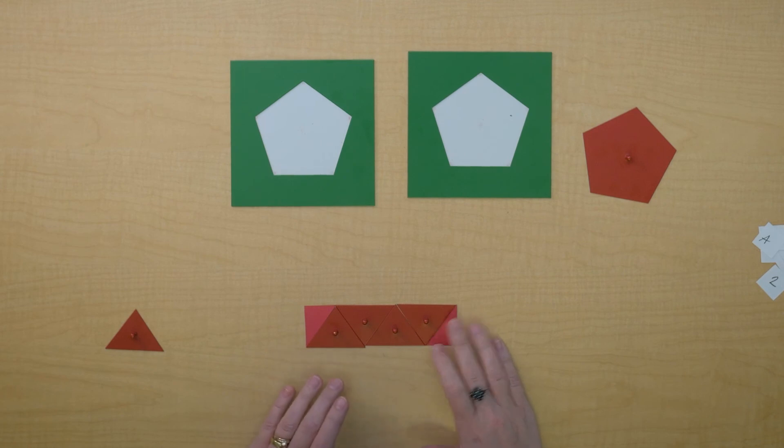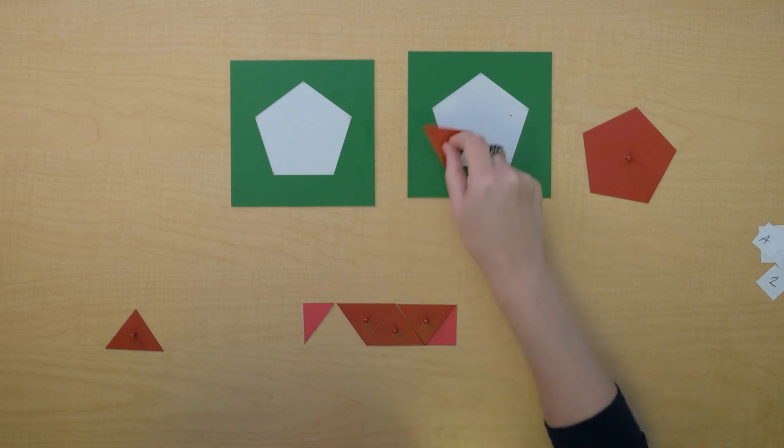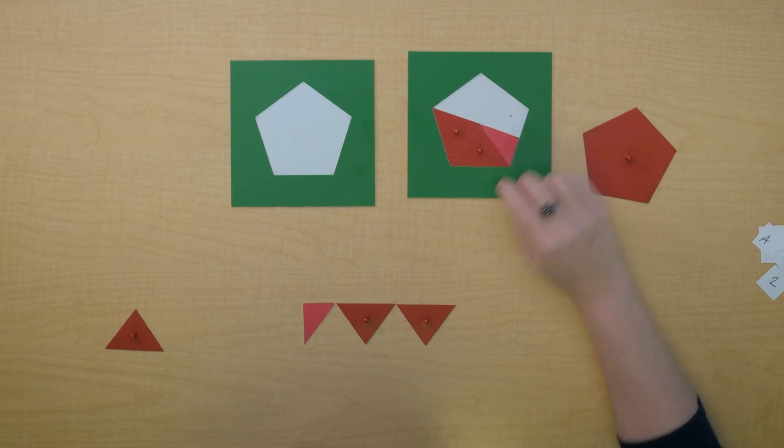So we know that, let's take a look, the base of this rectangle is, let's take a look at what it is in terms of the pentagon. Oh, look at that, it's half of the perimeter. And the height of this rectangle is the apothem.